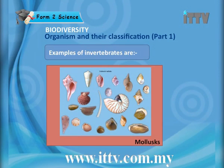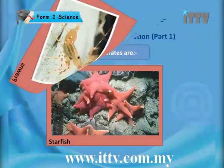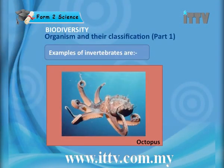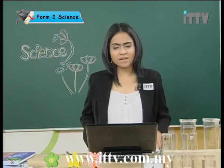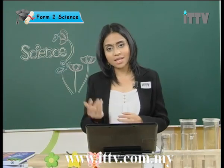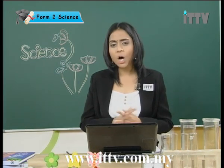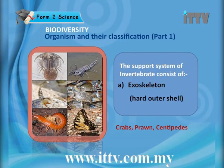Other than insects, invertebrates include mollusks, crabs, prawns, starfish and octopus — most of these live in the sea. The support system of invertebrates consists of an exoskeleton, which is a hard outer shell. Examples of exoskeleton animals are crabs, prawns and centipedes — any animal with a hard outer covering is classified into this category.